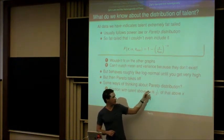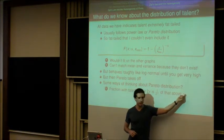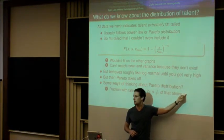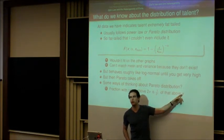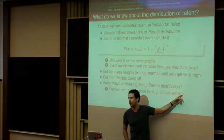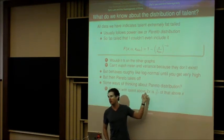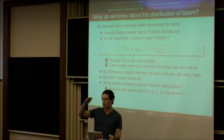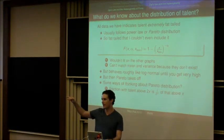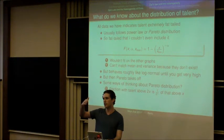So if alpha is 1, if there are a hundred people earning more than a hundred thousand dollars, there will be 50 people earning more than two hundred thousand dollars. That's a very slow process of dying out.